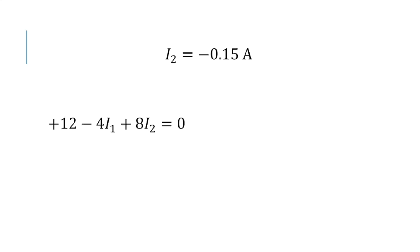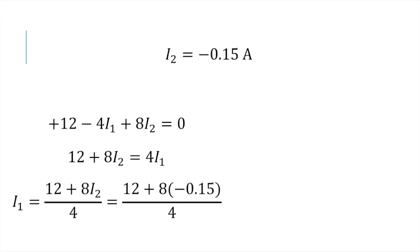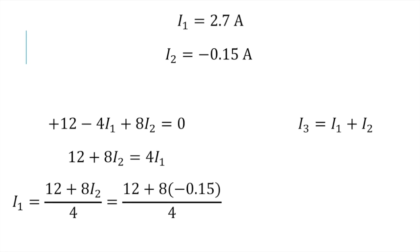Going back to one of the loop equations, since we know I2 we can solve for I1. We isolate: add 4I1 to both sides and divide by 4, then plug in I2 equals negative 0.15 — you must keep the negative. You get I1 equals 2.7 amps. Last, the current law equation is already isolated for I3, so we do I3 equals I1 plus I2. Again I2 is negative so they end up subtracting, and we get I3 equals 2.55 amps.